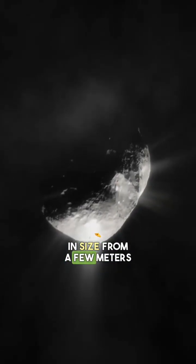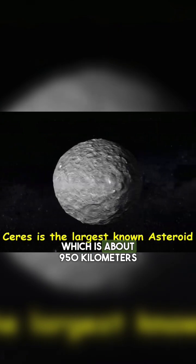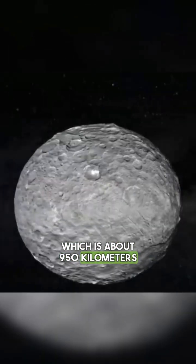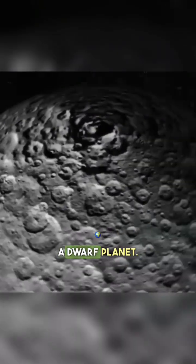Fact 2. Asteroids range in size from a few meters to hundreds of kilometers across. The largest asteroid is Ceres, which is about 950 kilometers across. Ceres is so large that it is considered a dwarf planet.